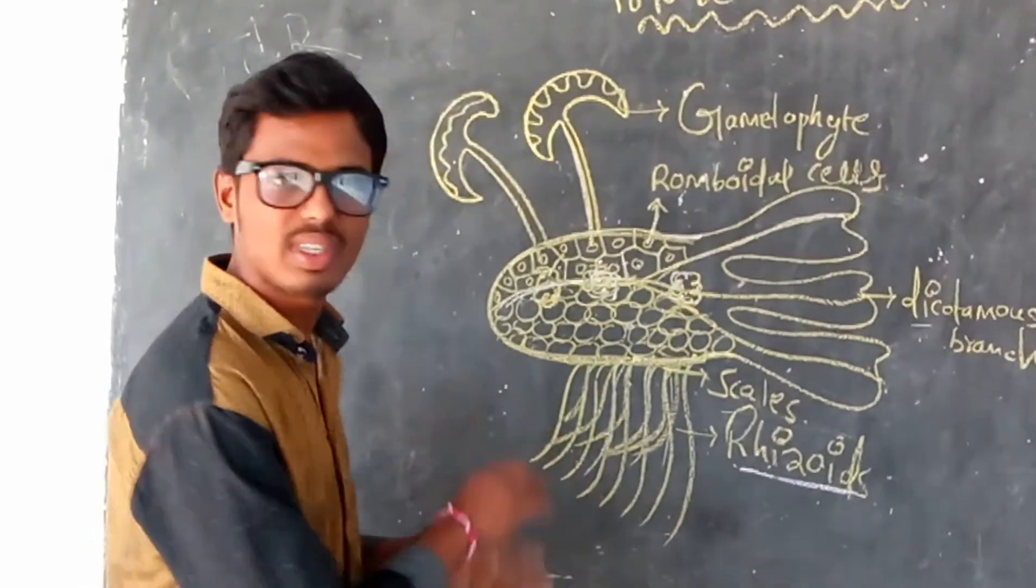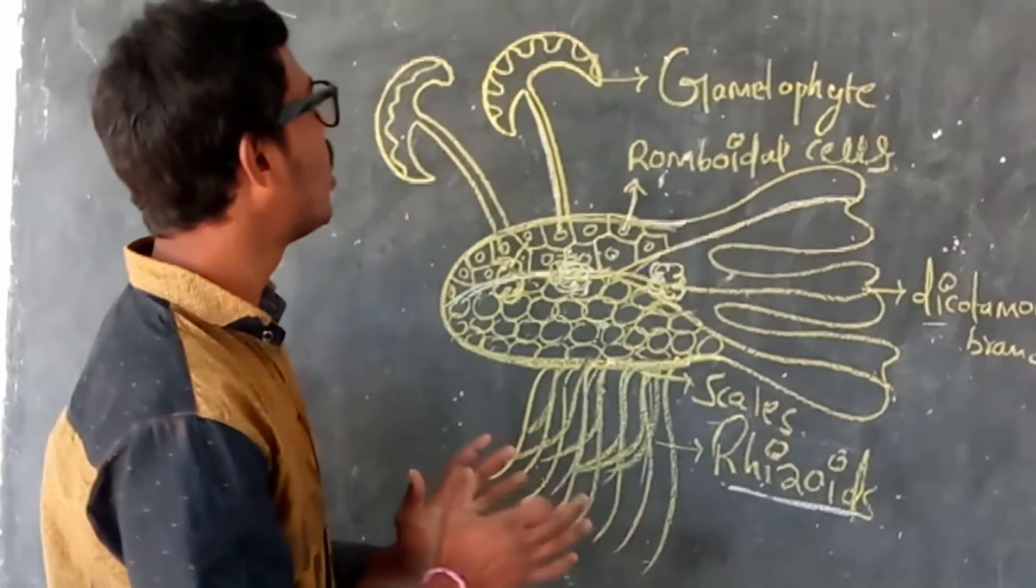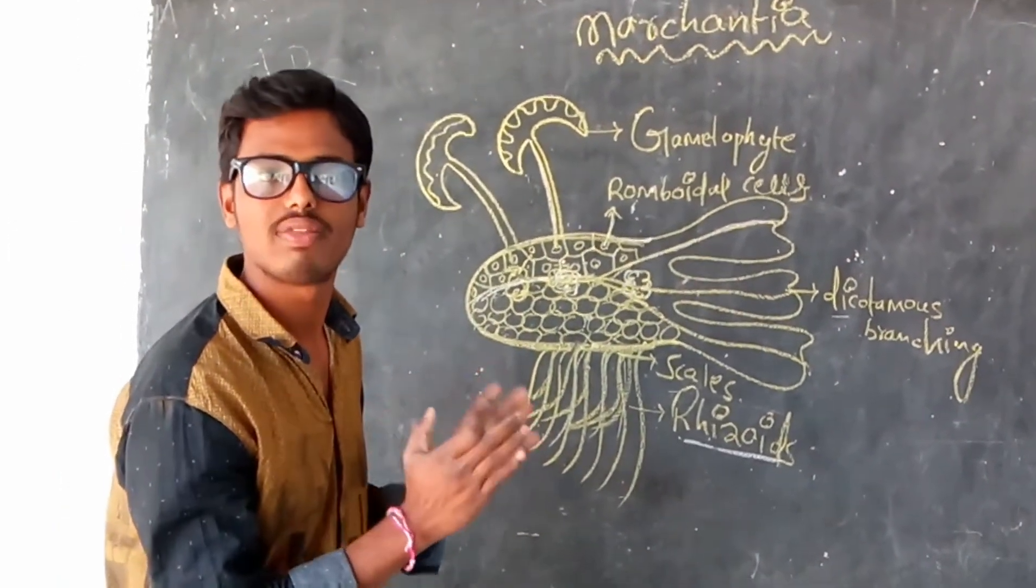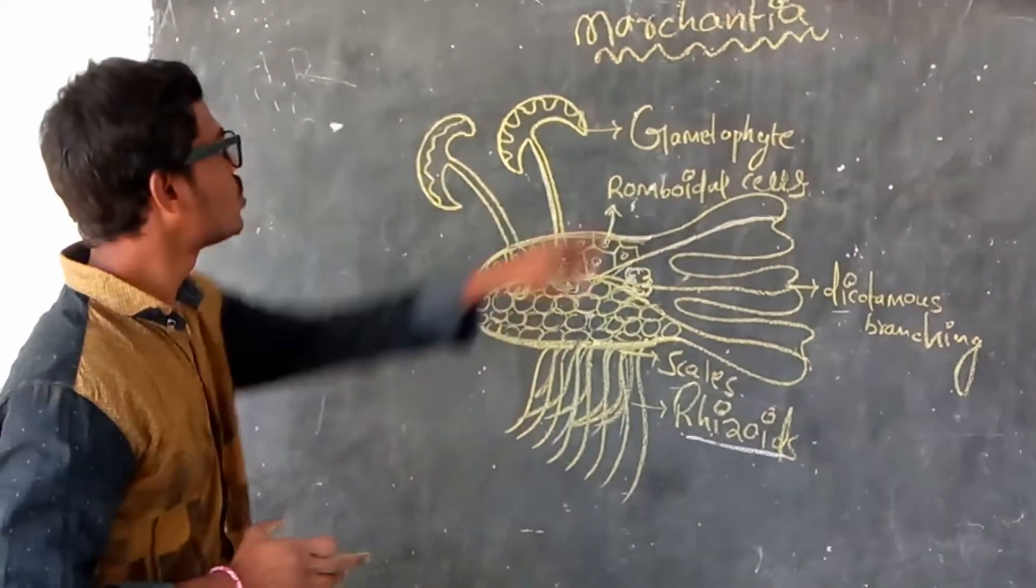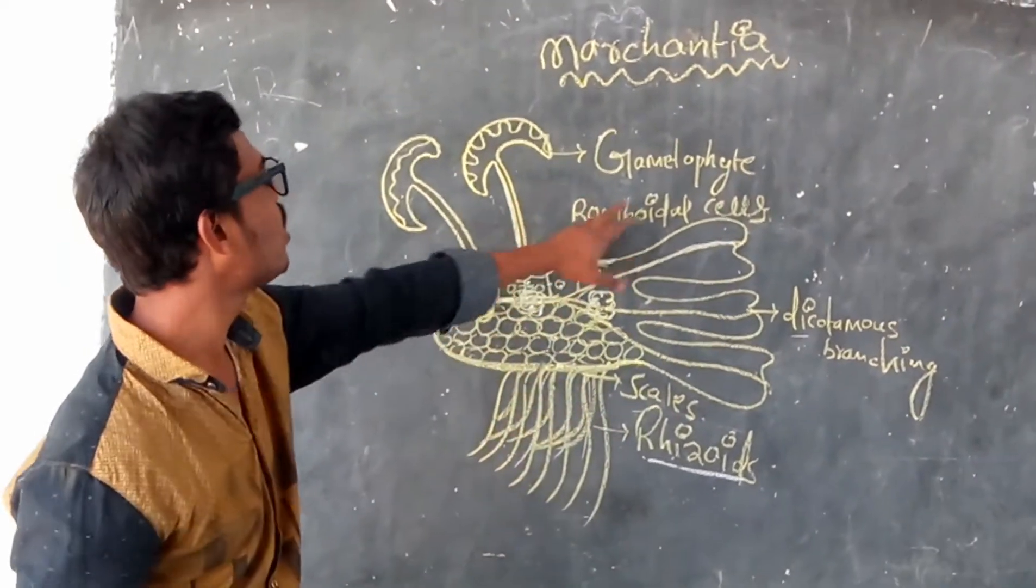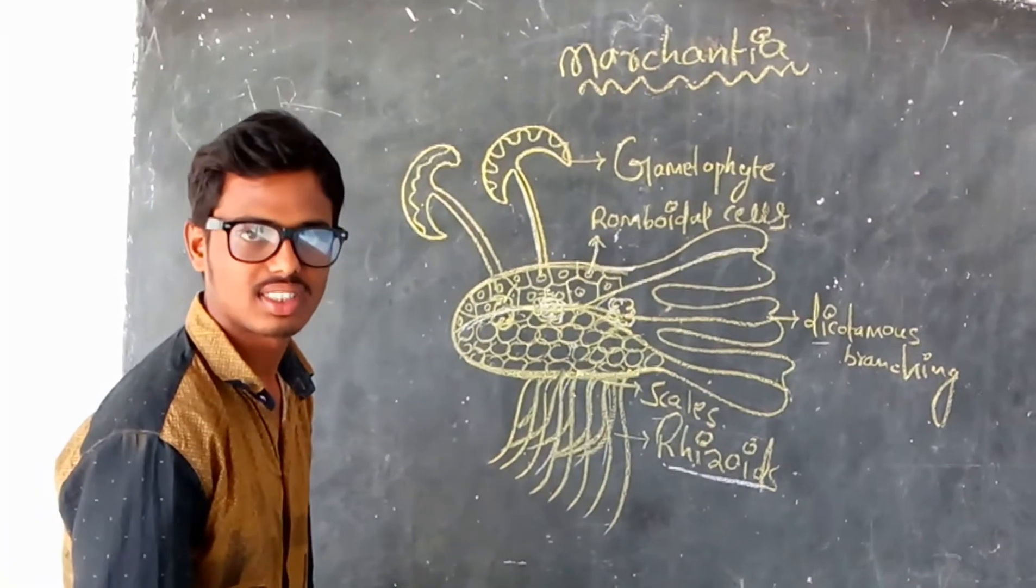This is the difference between the dorsal and ventral part. This is the external structure of the thallus we observed today. What we observed: Marchantia is a liverwort and we explained the main reproductive parts, the gametophytes.